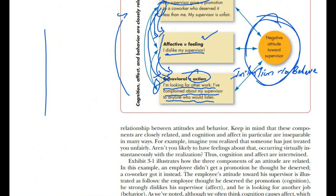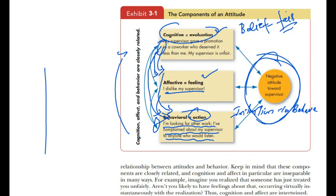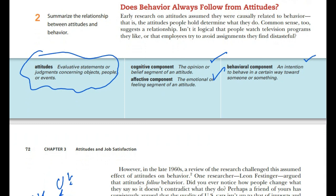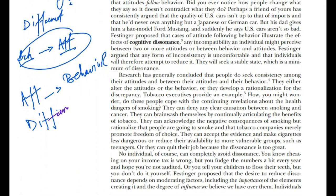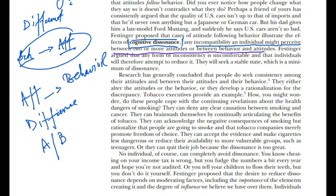For example, if I think the treatment is unfair and I dislike my supervisor, but I keep my behavior positive — you see here a difference between attitude and behavior. This concept is termed cognitive dissonance. Cognitive dissonance is when there is a difference between an attitude and a behavior, or between two different attitudes.